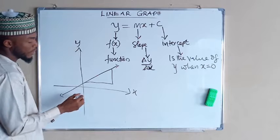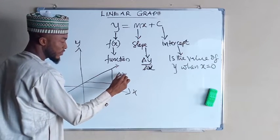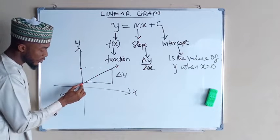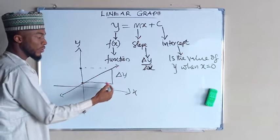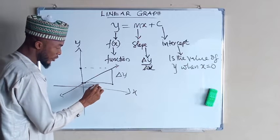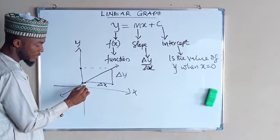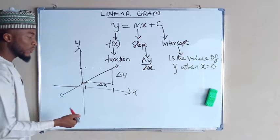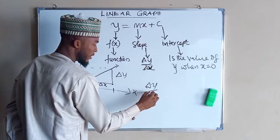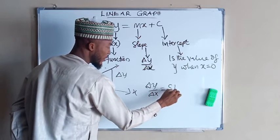This is what we call a slope. This place is the change in y, which means the range between this point to this point is the change in y. While from this particular point to this particular point is called change in x. So change in y divided by change in x is what is termed as a slope.